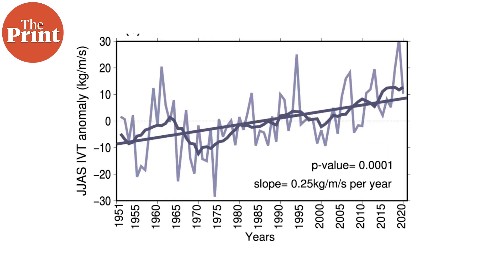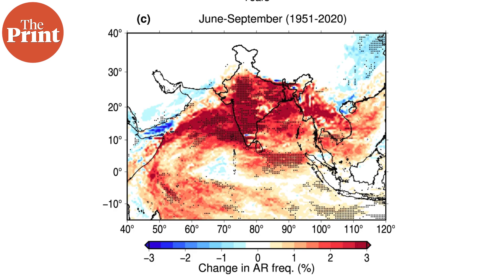The study found patterns showing that while peninsular India experienced atmospheric river systems during the summer monsoon, the northern plains had atmospheric river systems during July to August. There were a total of 596 atmospheric river systems logged in India in this period.